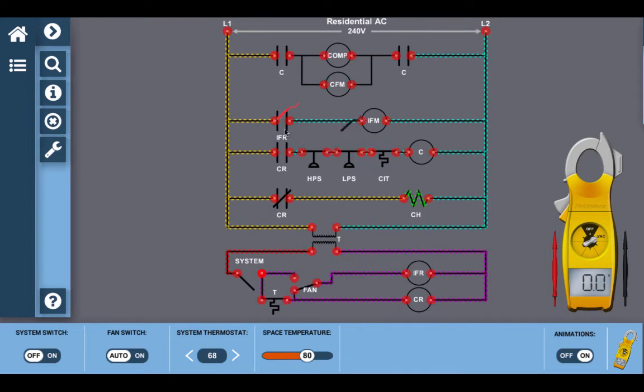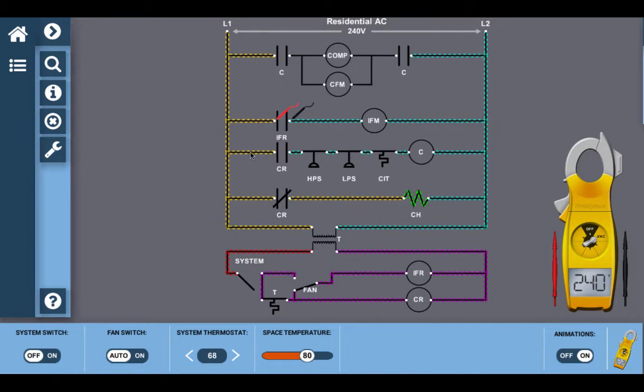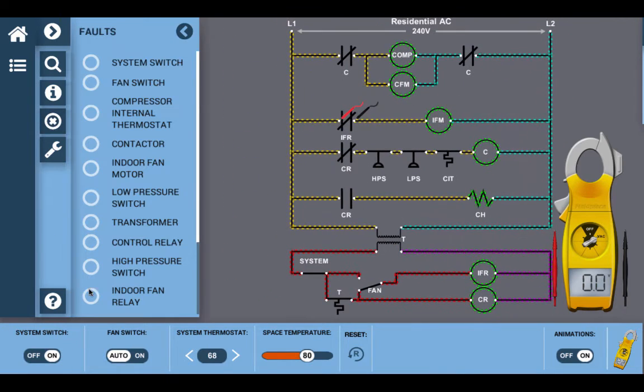Most importantly, E4H has the ability to set a fault on each individual component, creating a dynamic environment for learning. In this case, I have set a fault on the IFR. I can now pull out the multimeter and test the effects with or without a fault.